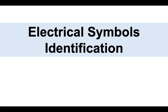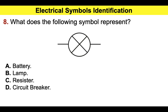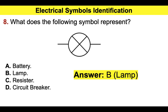Let's now have a look at some electrical symbols identification test questions. Here's an example: what does the following symbol represent? Most people would think they have no idea. The key is to look at the answer options and use a process of elimination. A, a battery; B, a lamp; C, a resistor; or D, a circuit breaker. It's not a battery because we've already seen what that looks like. It doesn't look like a resistor. It could be a lamp or a circuit breaker. The correct answer is actually B — it is a lamp. So now it's your turn to have a go.